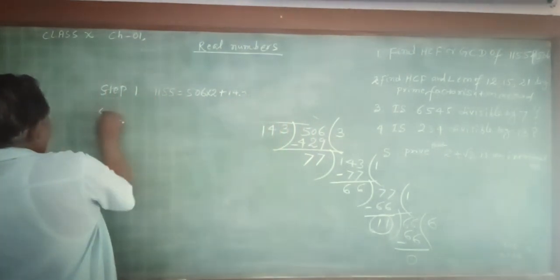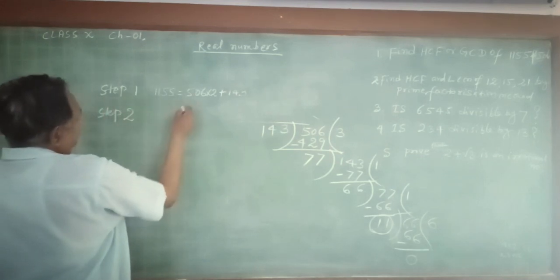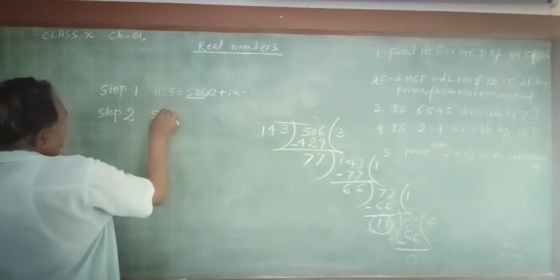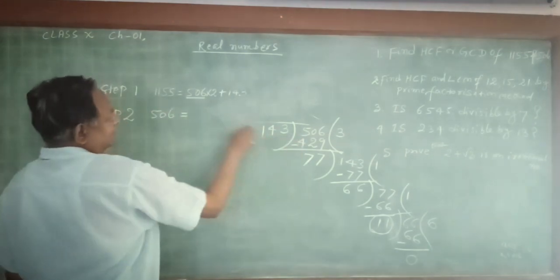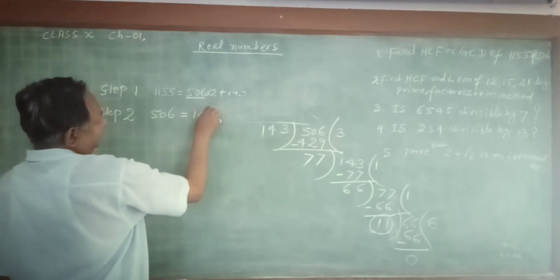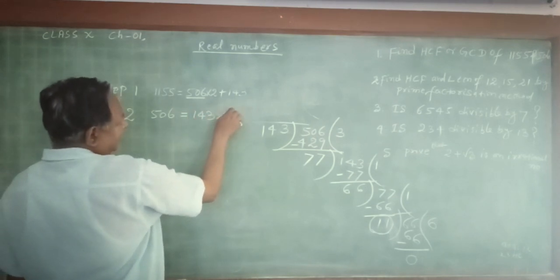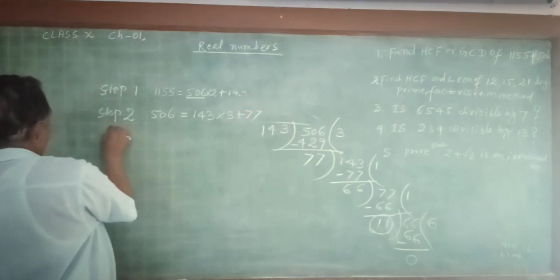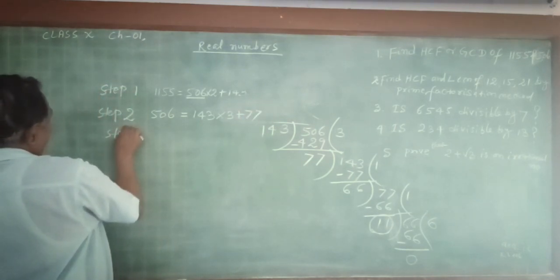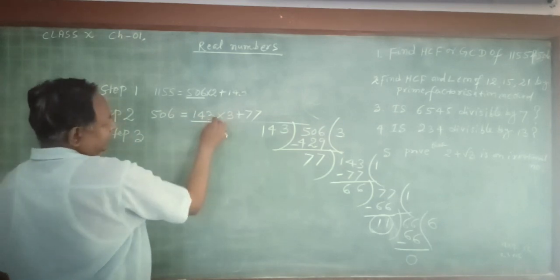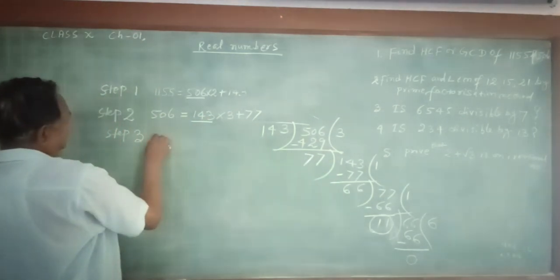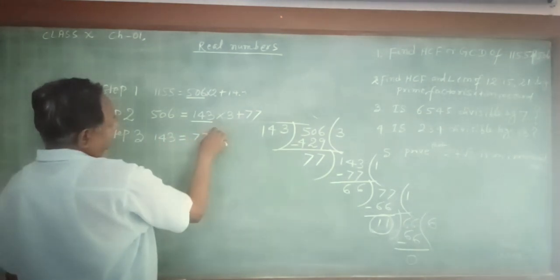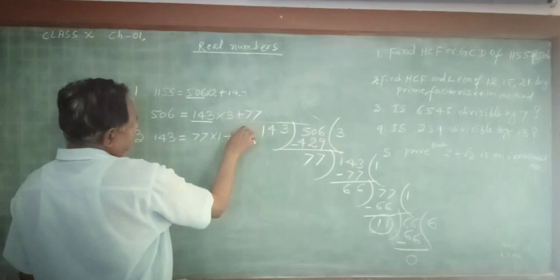Step 2: 506 can be written as 143 multiplied by 3, plus 77. Step 3: 143 can be written as 77 multiplied by 1, plus 66.